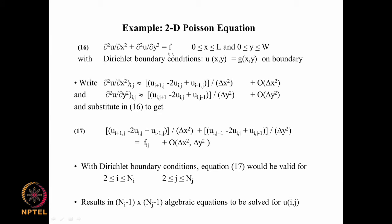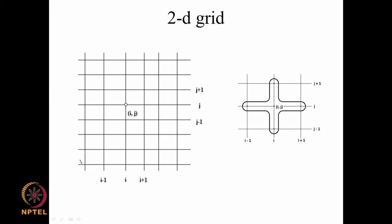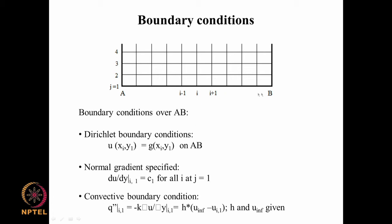In the last lecture, we saw the Poisson equation and how to discretize it. We had equation 16 as a Poisson equation subject to Dirichlet boundary conditions, and on a two-dimensional grid for the point i,j, we derived a computational molecule consisting of the immediate right, left, bottom, and top neighbors. We then considered three different boundary conditions: the Dirichlet boundary condition, the Neumann boundary condition, and the convective boundary condition.